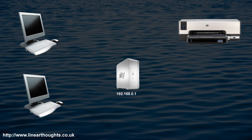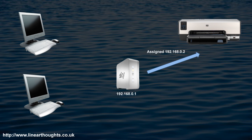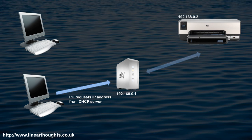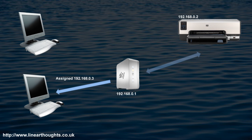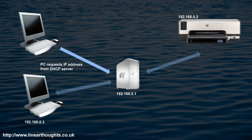Once a router is set up on the network, the other devices request their own IP addresses from it. In the example shown, the printer is the first to ask, gets a number back from the router, and uses that number on the network. This process then continues with the other devices — the PC bottom left requests an address and is assigned one, then the PC top left requests and gets assigned one similarly.